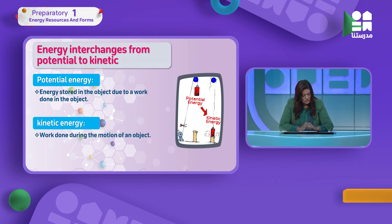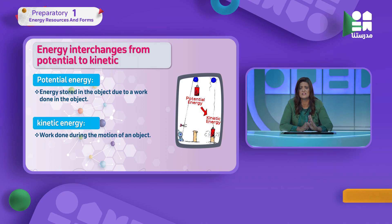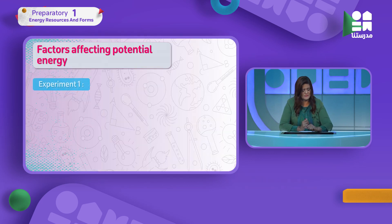Kinetic energy is the energy of movement — any body that moves has kinetic energy. Work done is the work done during the motion of an object. As long as it is moving, it has kinetic energy. Once kinetic energy finishes, it converts to potential energy. Now let's look at the factors affecting potential energy.